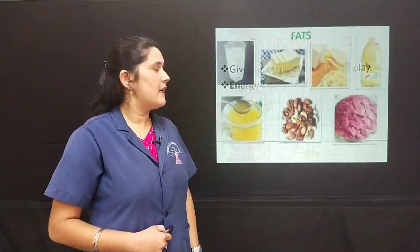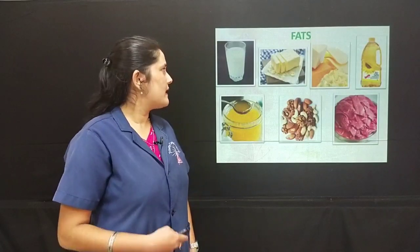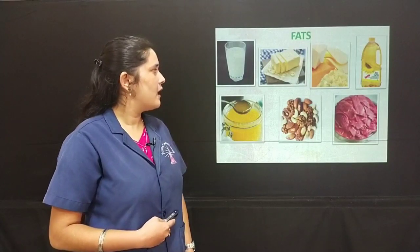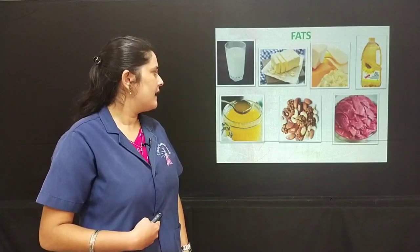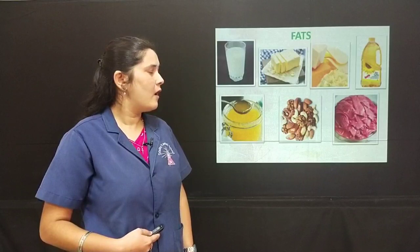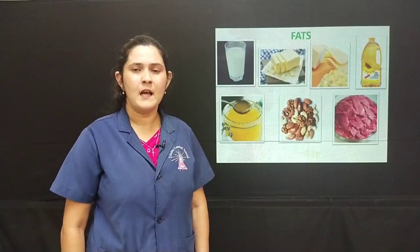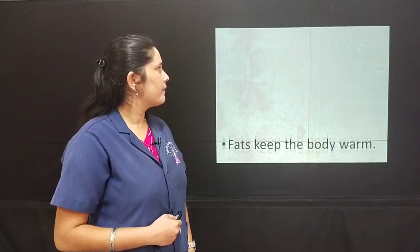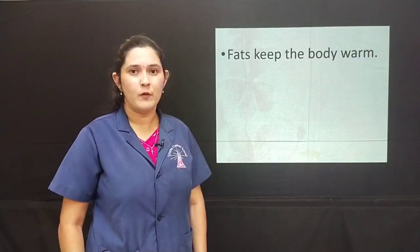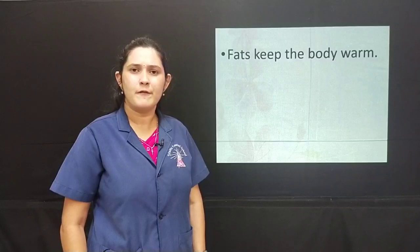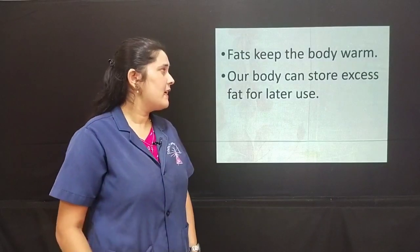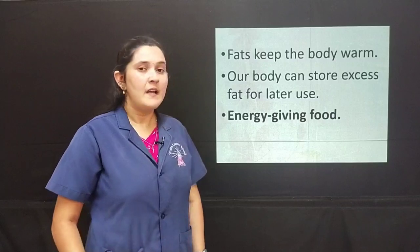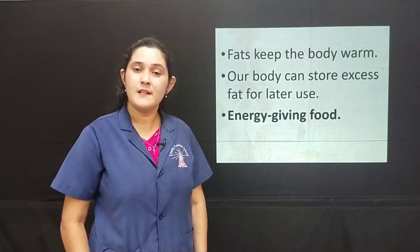The next nutrient we study is fats. Here you can see the sources of fat — milk, butter, cheese, oil, ghee, nuts and meat. All this food is rich in fats. How do fats help our body? Fats keep the body warm. Our body can store excess fat for later use. They are also known as energy-giving food, just like carbohydrates.